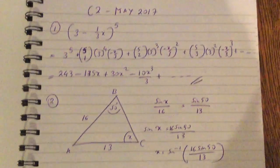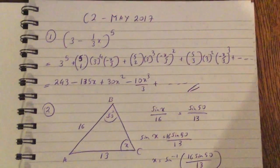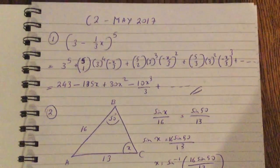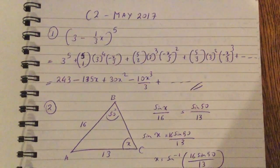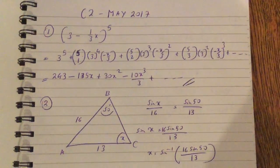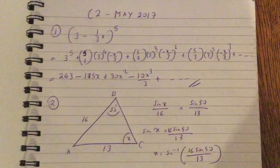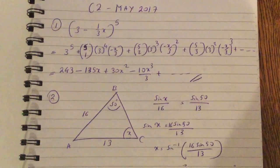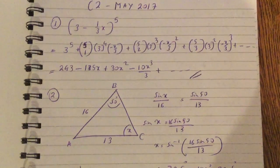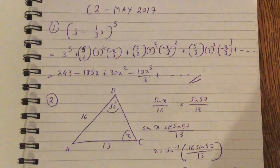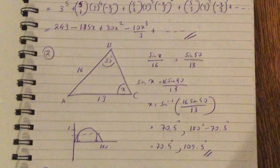This is the C2 answers for 2017 at Excel. The first question is a binomial expansion. Using the binomial method in C2, the answer is 243 minus 135x plus 30x squared minus 10x cubed over 3, plus dot dot dot.